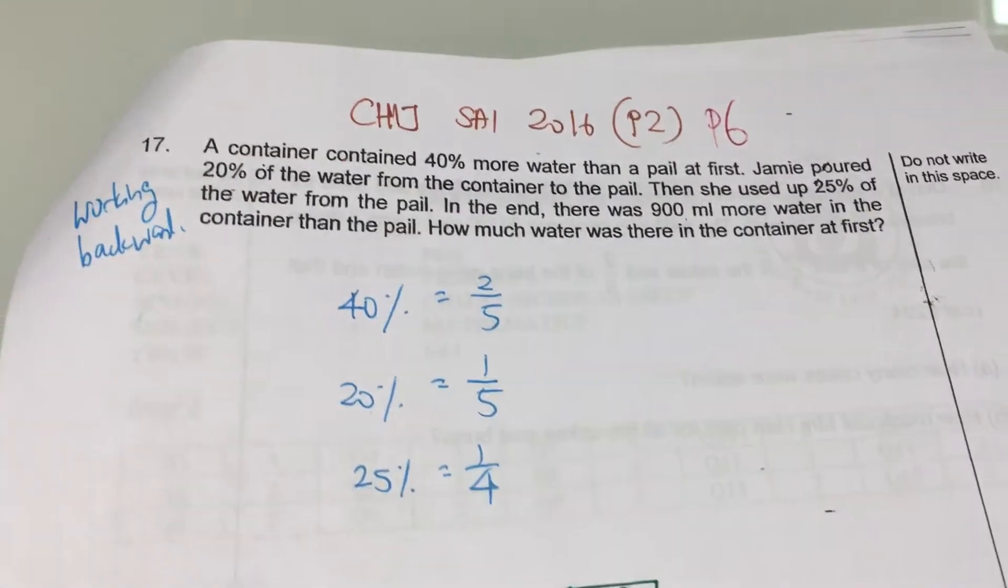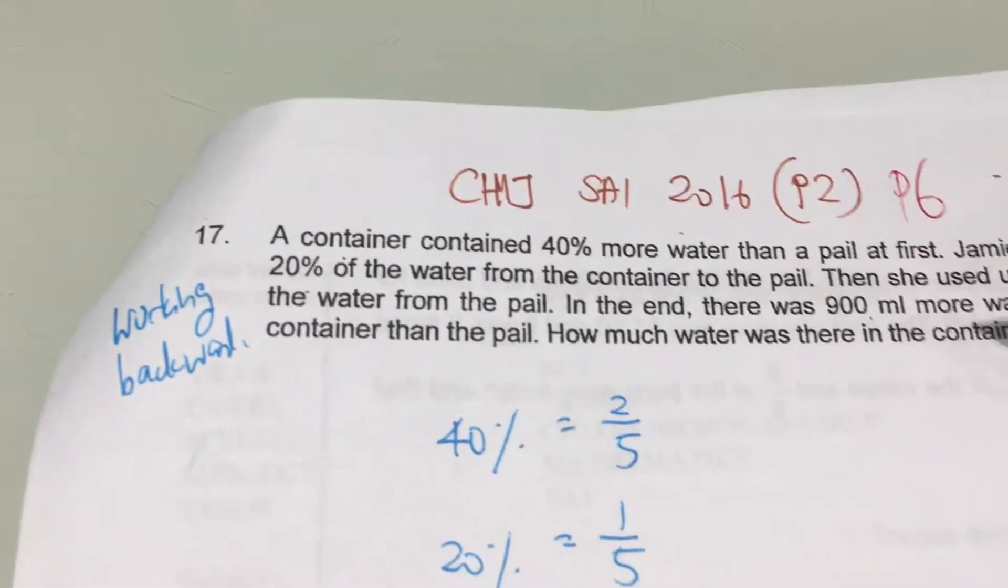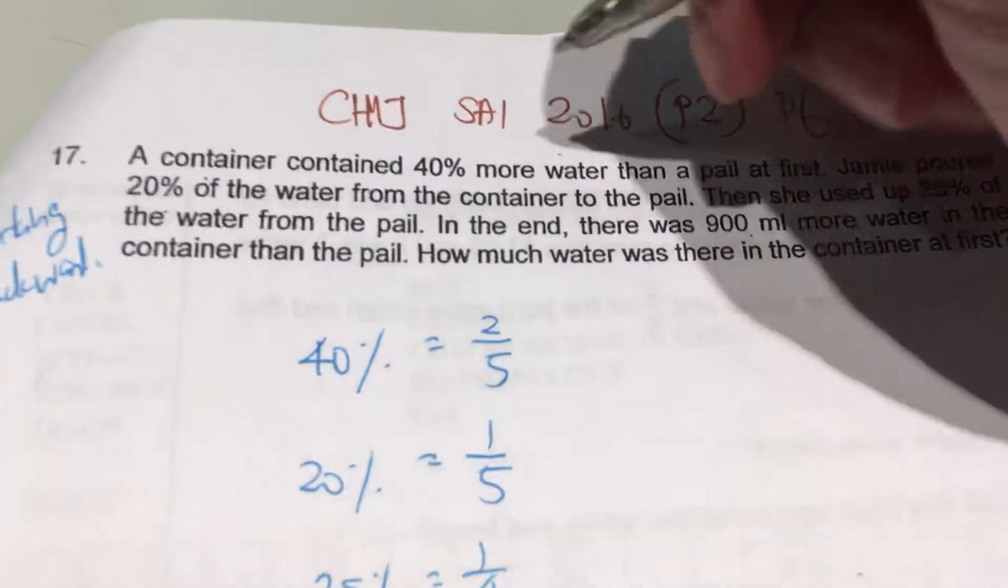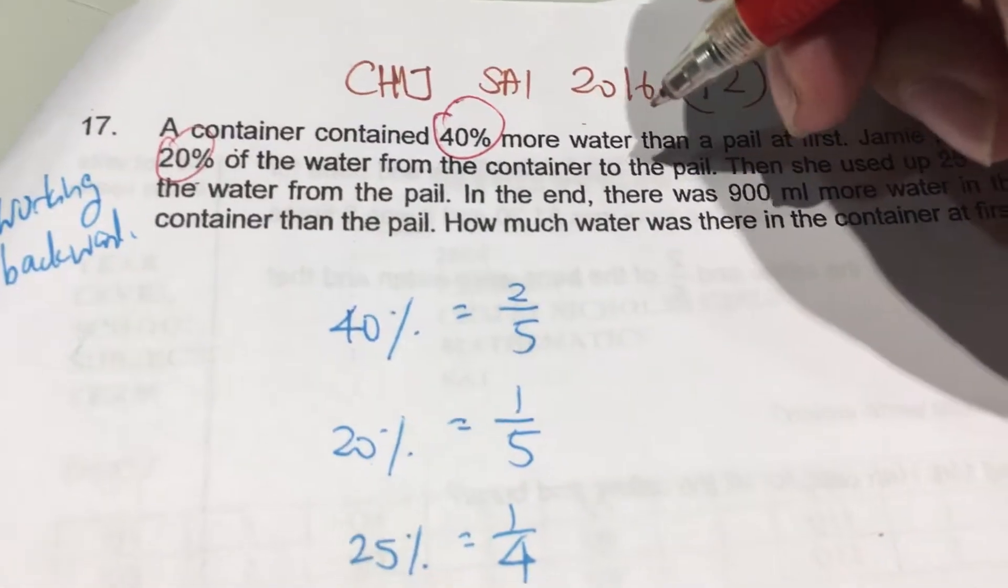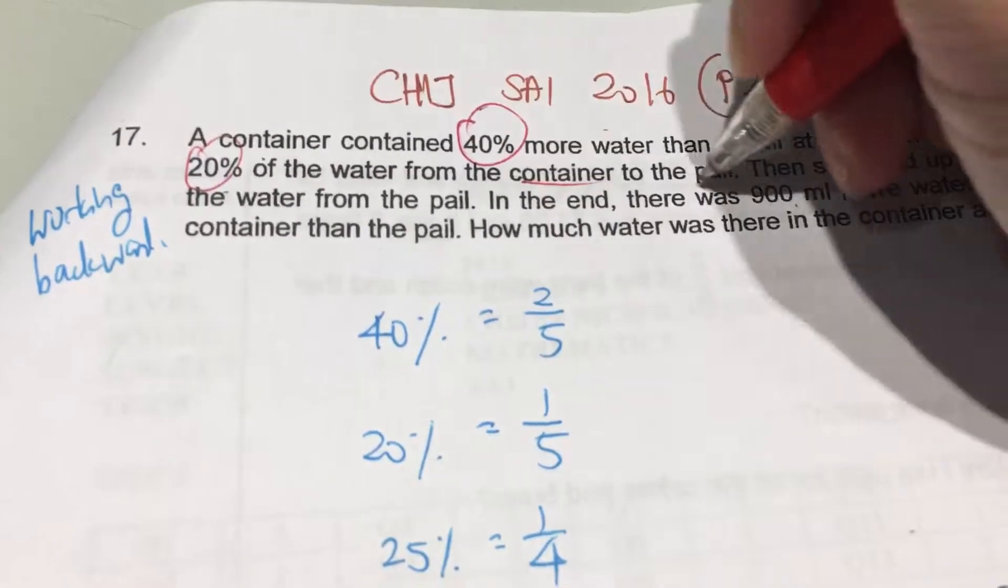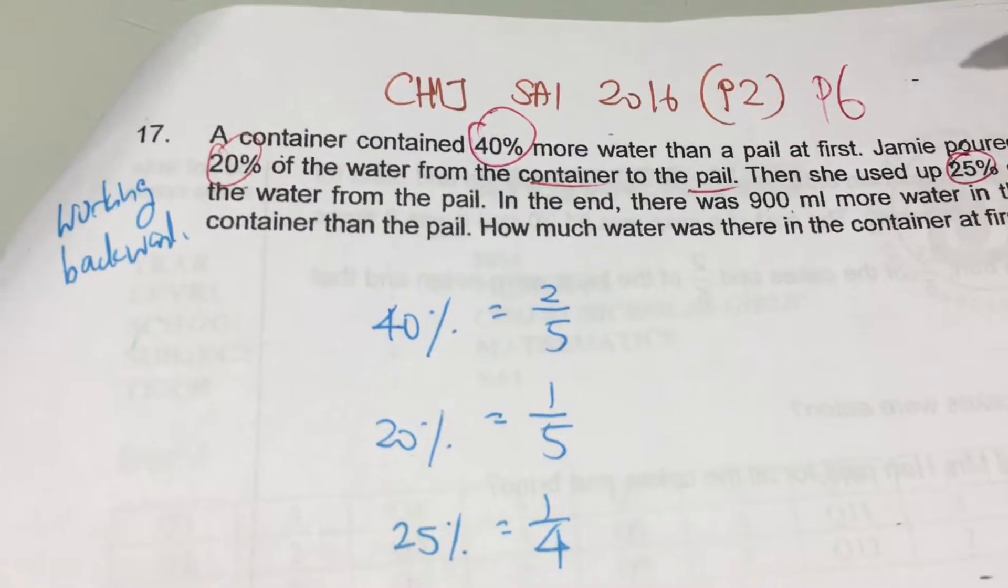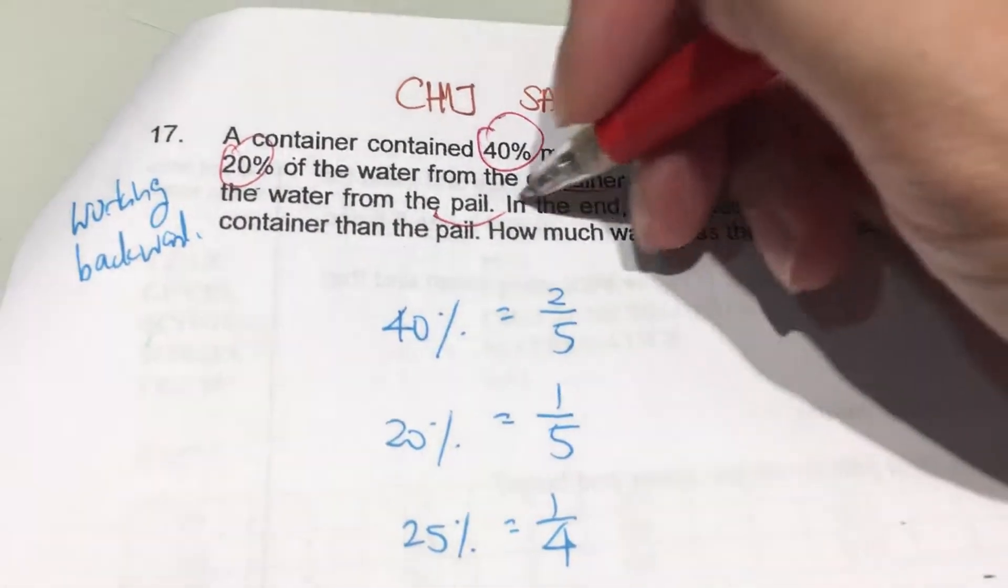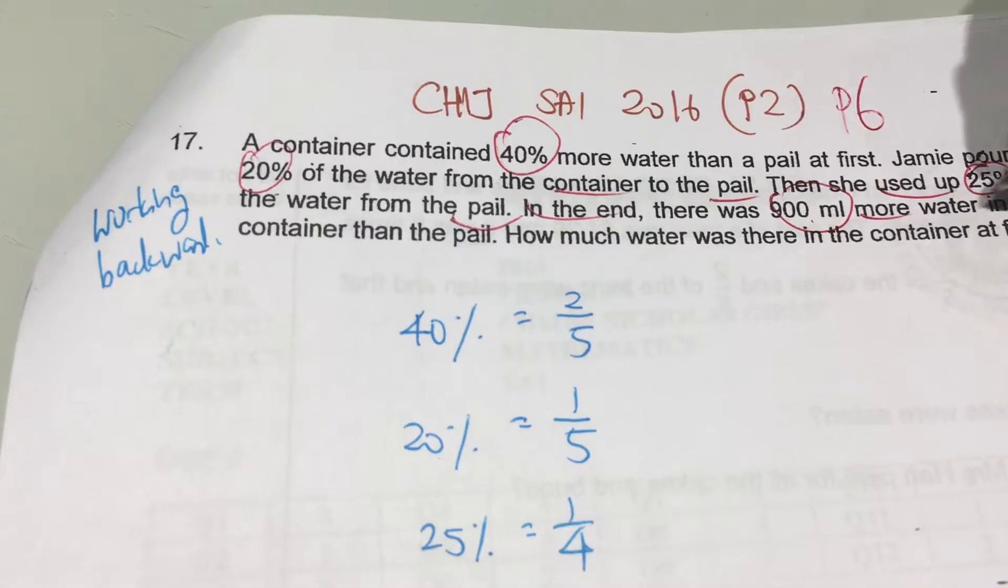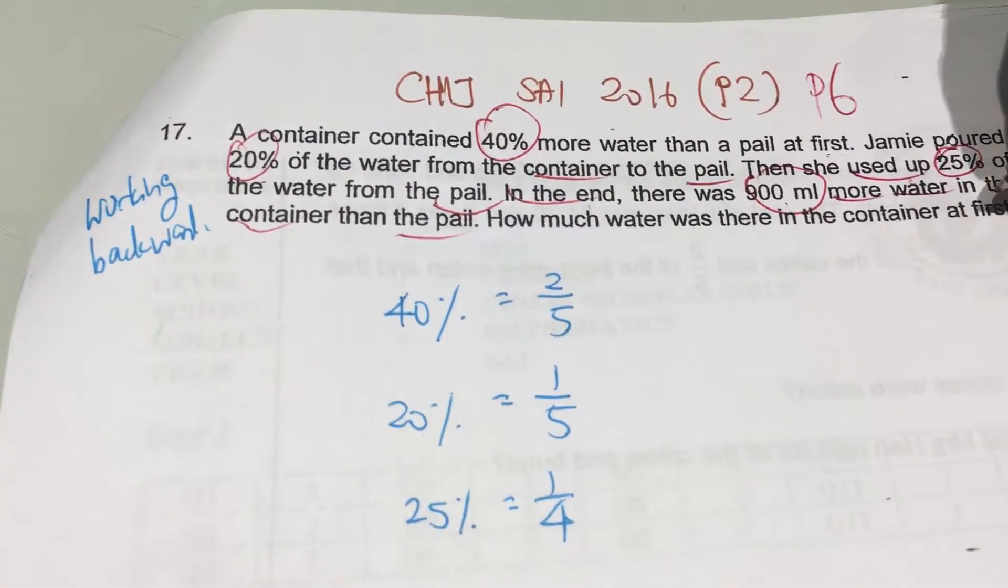In this question, a container contains 40% more water than a pail at first. Jamie pots 20% of water from the container to the pail. Then she uses up 25% of the water from the pail. And in the end, there was 900 ml more water in the container than the pail. How much water was there in the container at first?